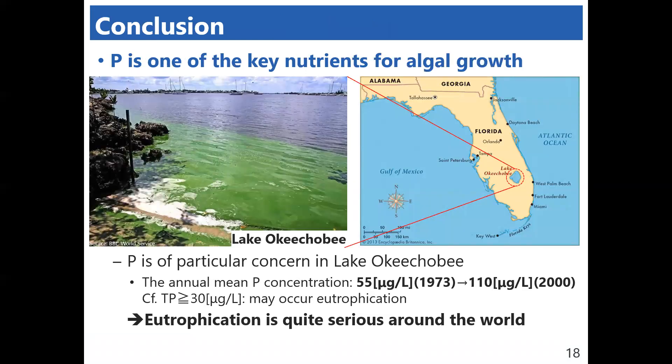To sum up, we can understand that phosphorus is one of the key nutrients for algal growth. Specifically, in Lake Okeechobee,